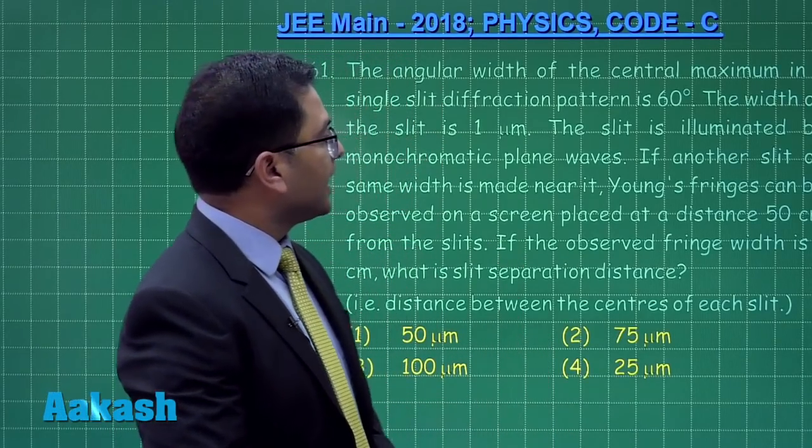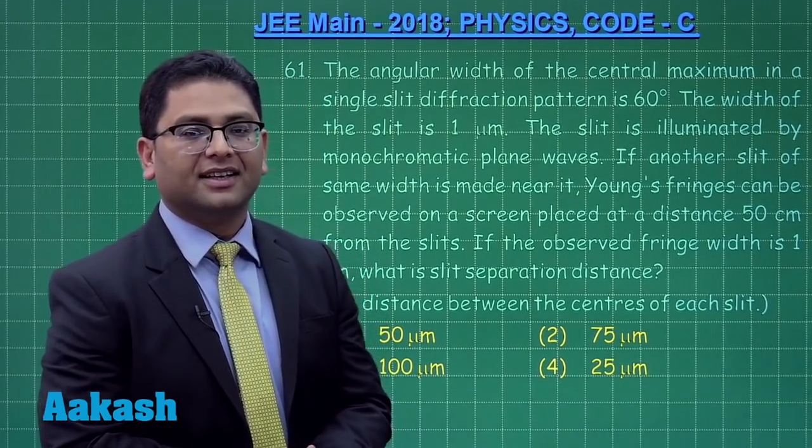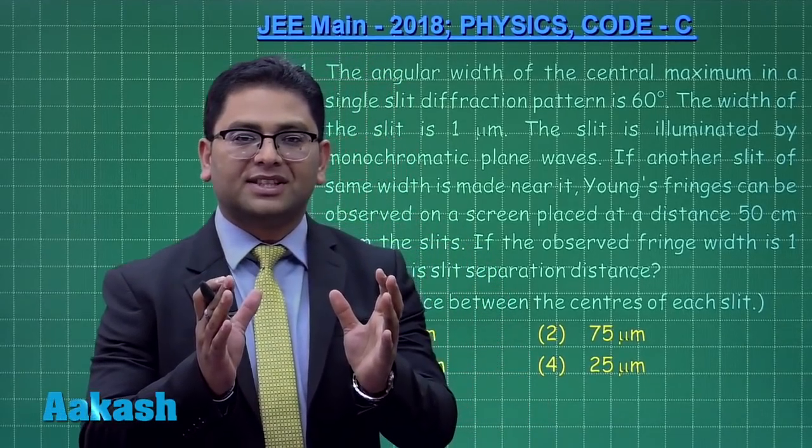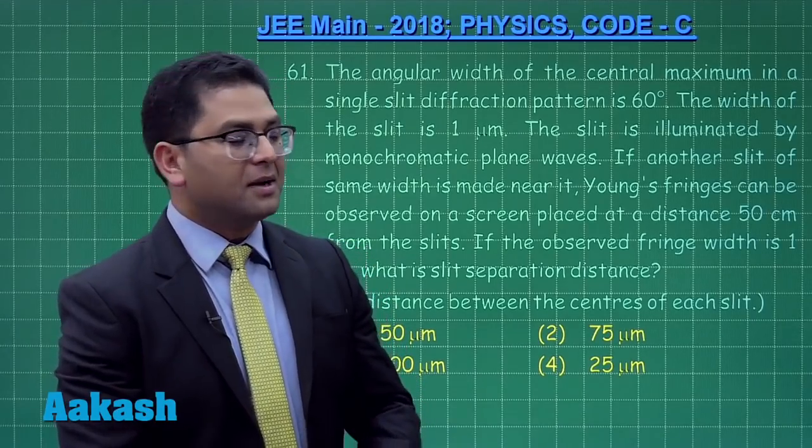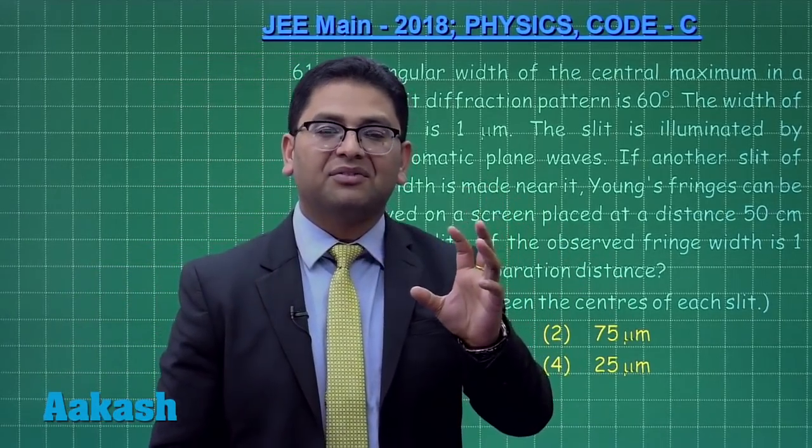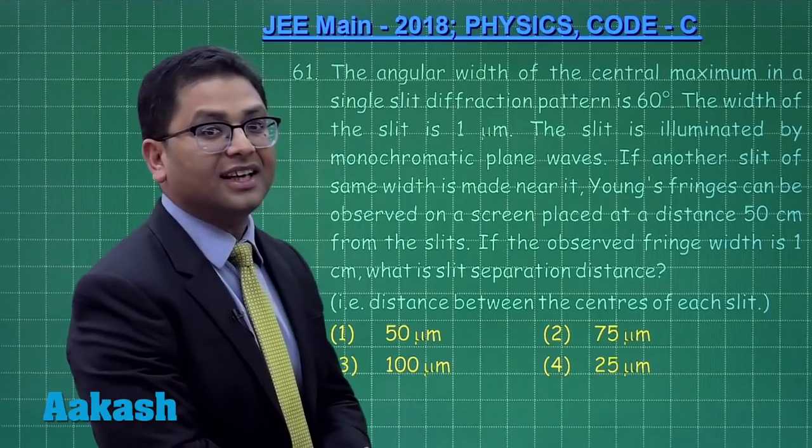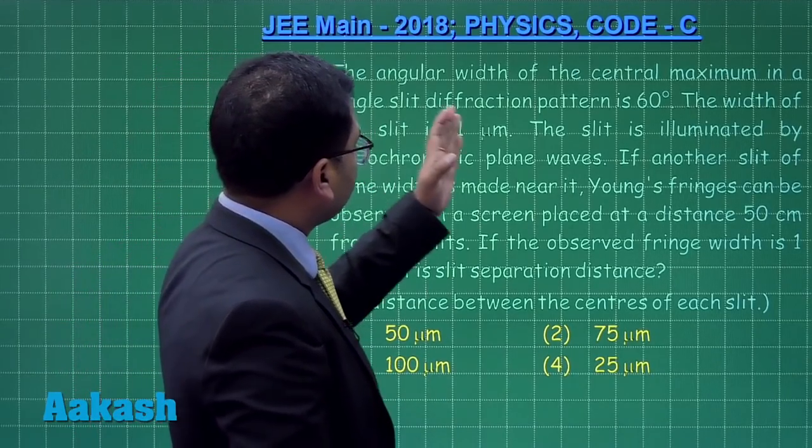In Code C, physics started with question number 61. In question number 61, there is a very remarkable thing - the question has been brought from the topic diffraction. Diffraction is a topic which is present only in JEE Mains, so in other words, by this question you have the DNA of JEE Mains where you get a question which is specifically in JEE Mains and not in JEE Advanced.